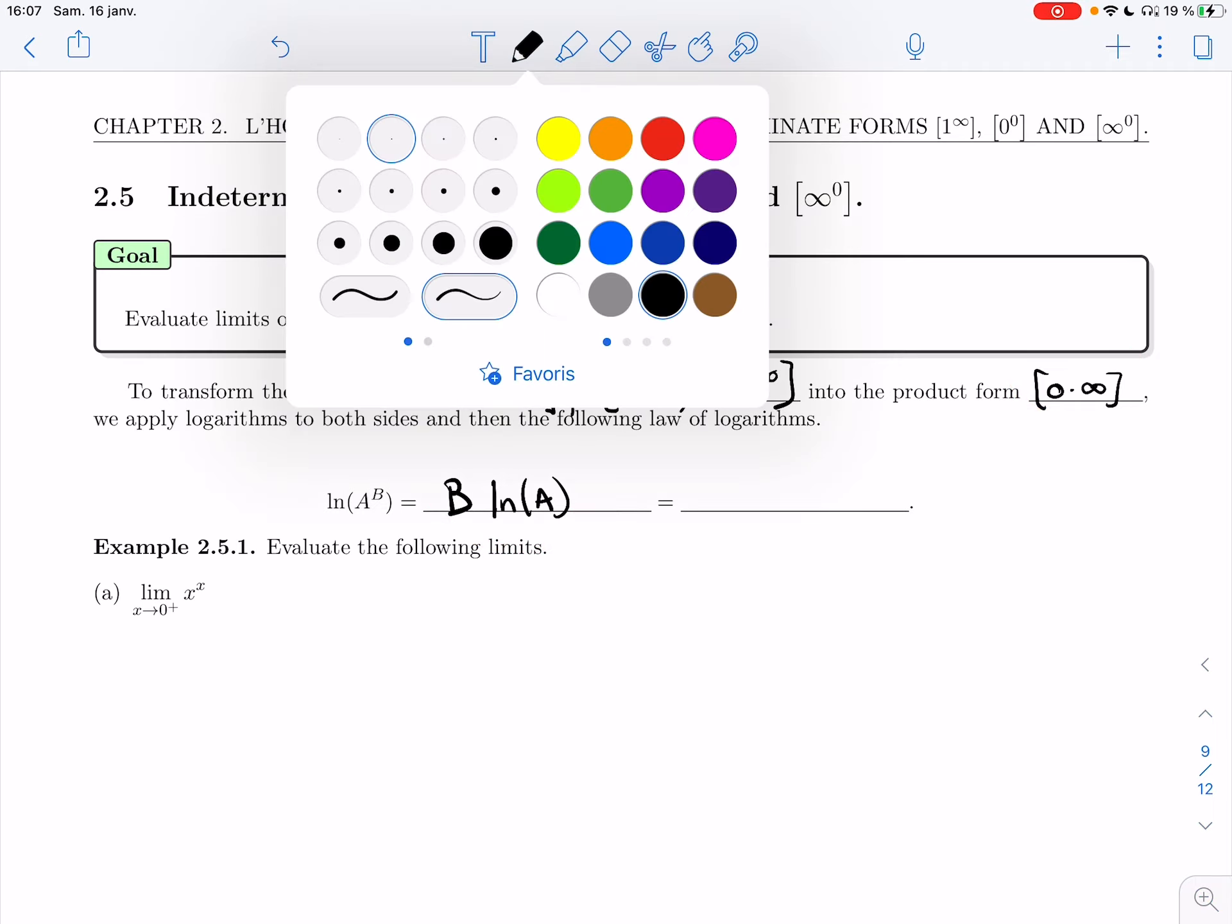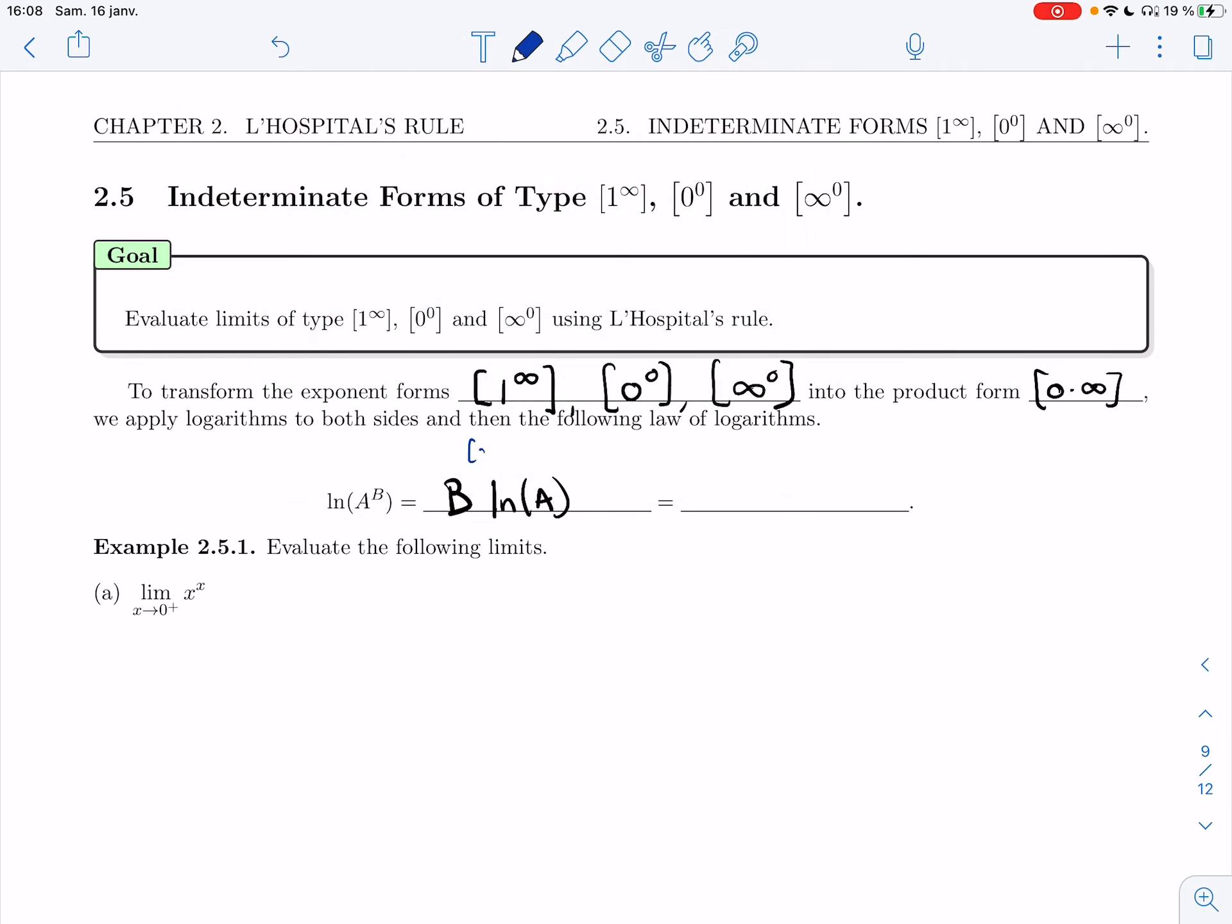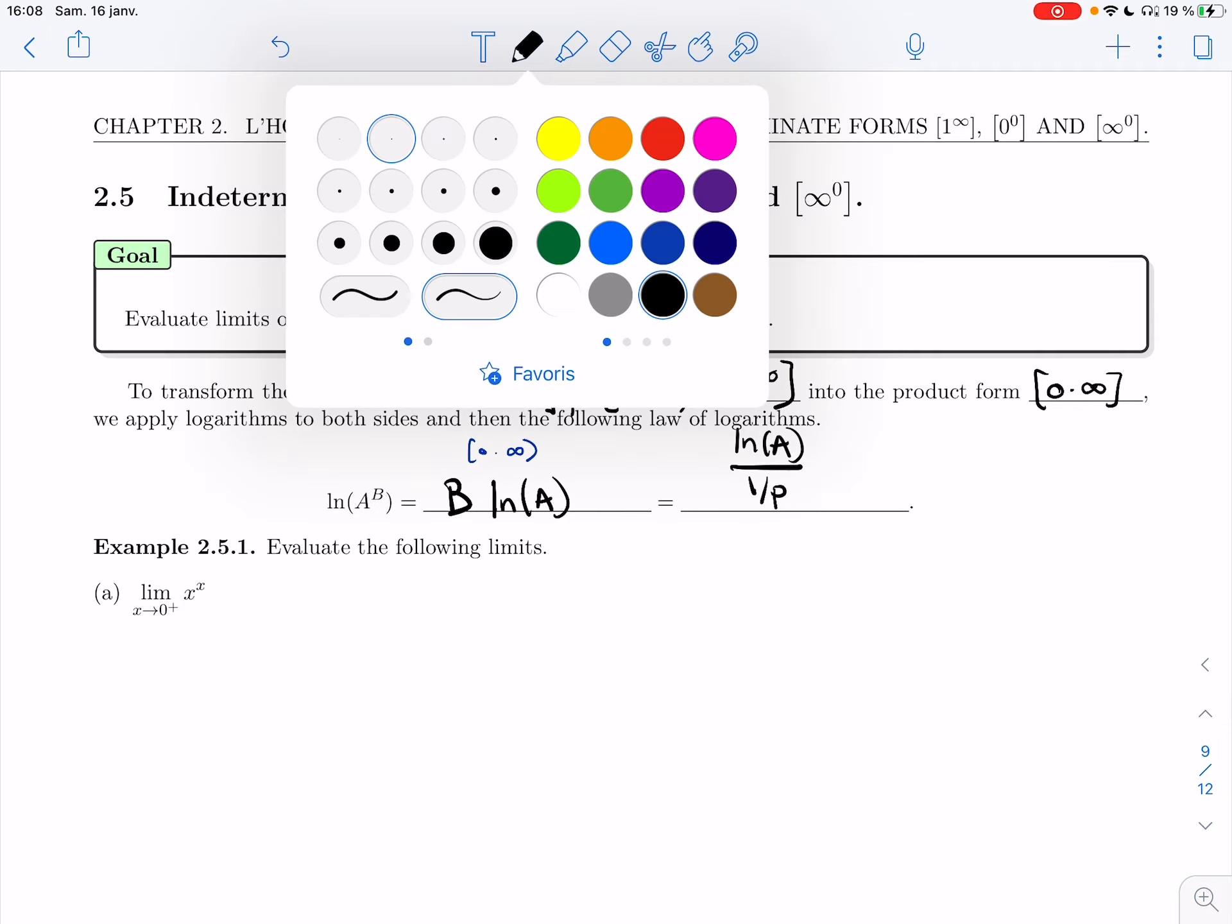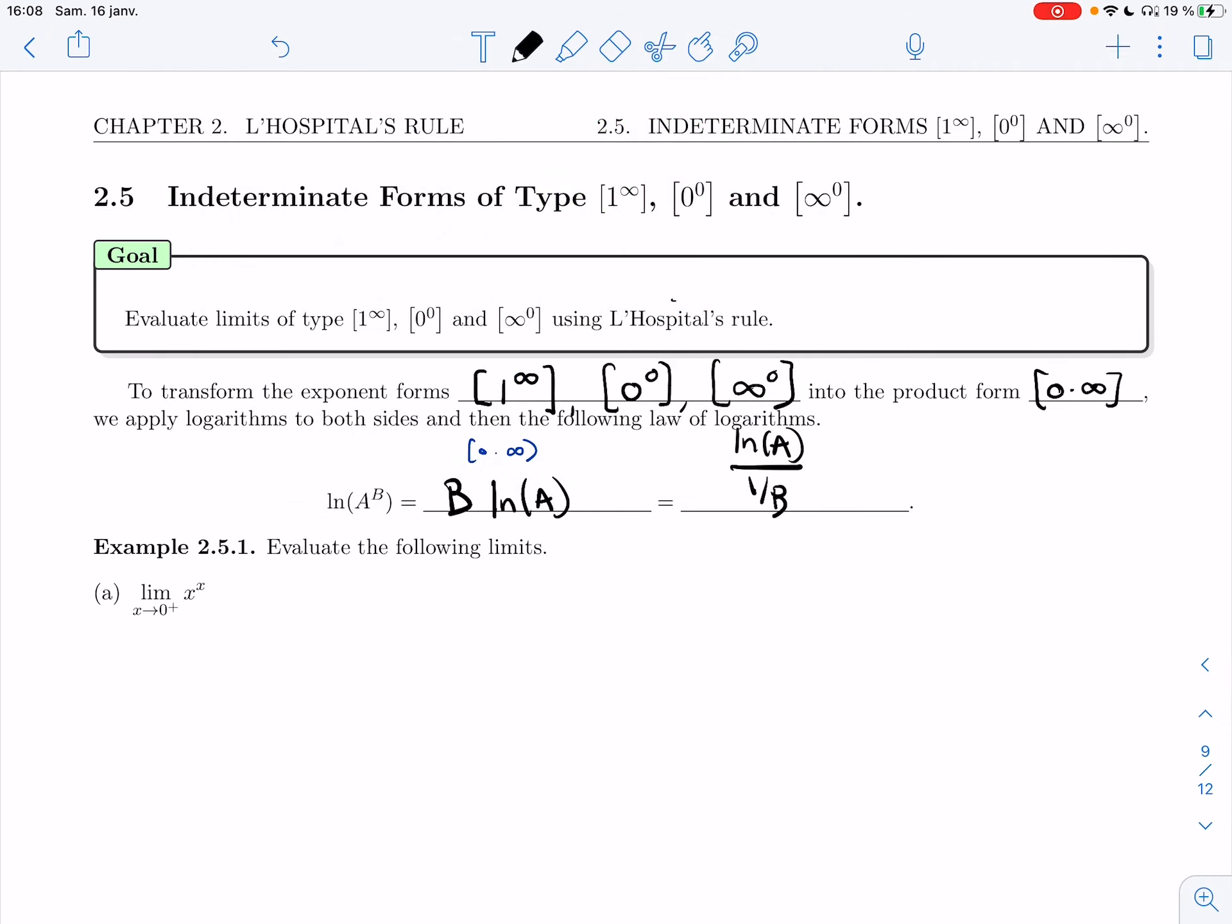That's going to be 0 times infinity. And so this one is going to be 0 times infinity. And then I'll turn it into log of A over 1 over B. And this one is going to be a 0 over 0 or infinity over infinity. And then I'll be able to use L'Hospital's.